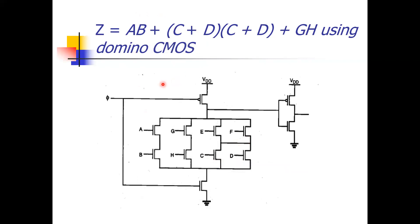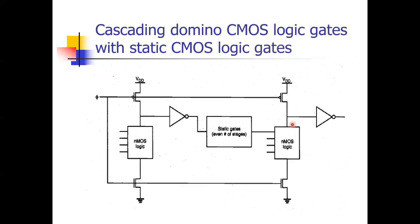If we draw the same logic using domino logic, there is no need to attach a PMOS network — only NMOS will be there. AB in series, C and D in parallel, E and F in parallel, GH in series. Then one PMOS at top and one NMOS at bottom with common clock makes it dynamic logic. Connecting one inverter at the output makes it domino logic. So from static logic to pseudo logic to dynamic logic, and the remedy for dynamic logic's problem is domino logic.